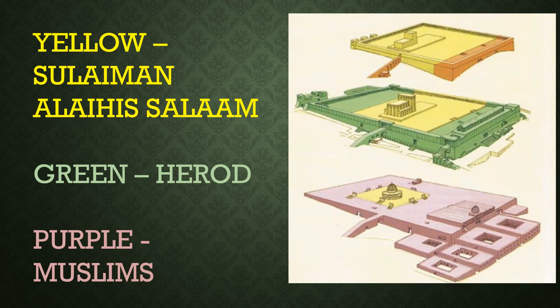Then you would have the period where Nabi Sulaiman builds onto the old foundation. That yellow area you see is the area where he added massive foundation stones to flatten and stabilize the area, because the mountain was obviously rounded on top.